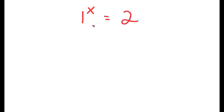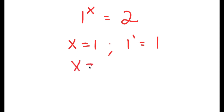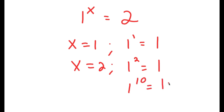In this video, I'm going to solve the equation 1 to the power of x is equal to 2. Before we even start solving this, if x is equal to 1, then I have 1 to the power of 1, which is equal to 1. If x is equal to 2, then I have 1 to the power of 2, which is also equal to 1. And even 1 to the power of 10 is still equal to 1. So you may be thinking: what possible value of x can make 1 to the power of x equal to 2?